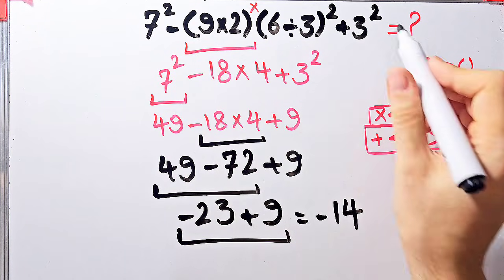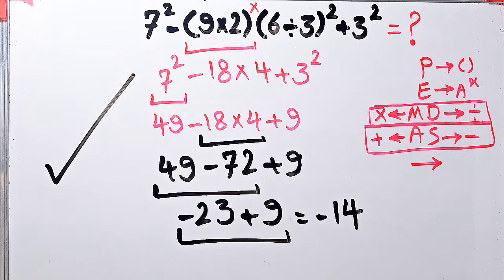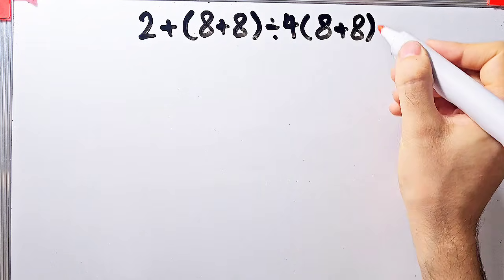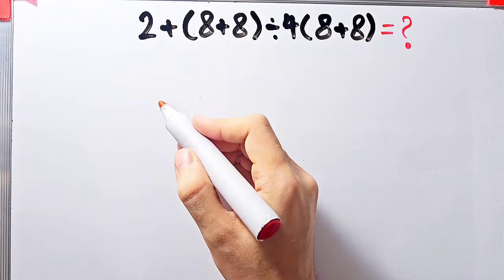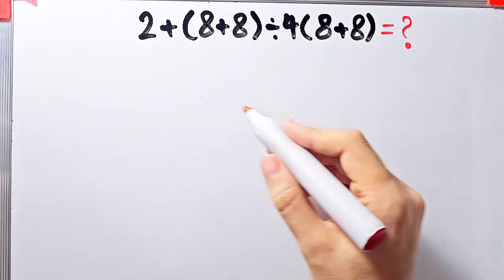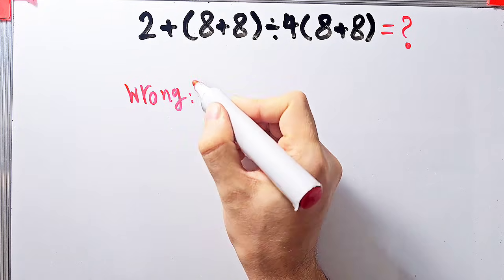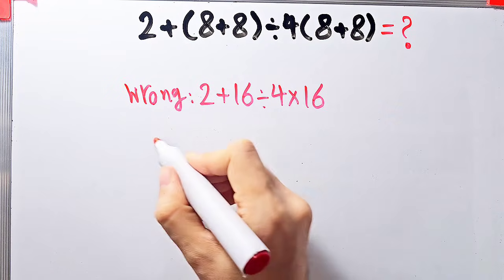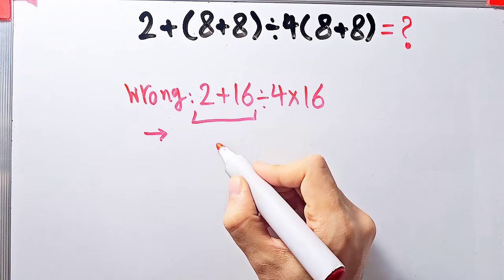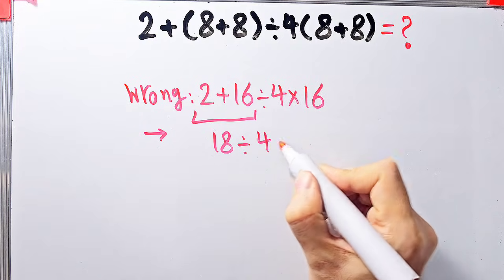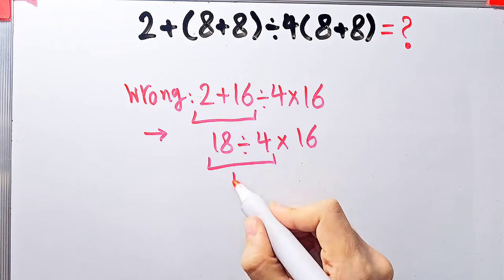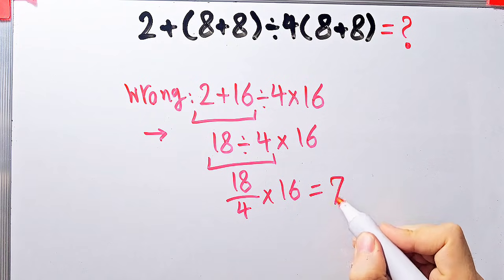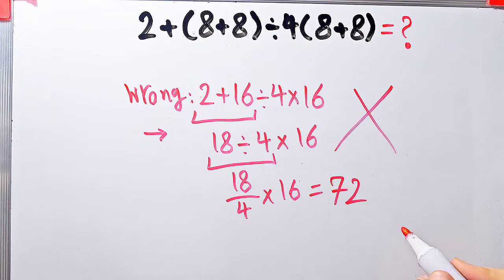Let's solve a third question: 2 plus open parentheses 8 plus 8 close parentheses divided by 4, then times open parentheses 8 plus 8 close parentheses. Some people start from the left: 2 plus 16 divided by 4 times 16 — then 2 plus 16 equals 18, 18 divided by 4 equals 18 over 4, and 18 over 4 times 16 equals 72. They say the answer is 72, but this is definitely wrong.